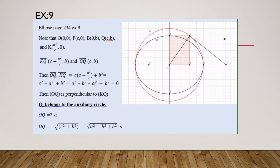Second, we want to prove that Q belongs to the auxiliary circle, so we must show that OQ = a. We find the distance OQ = √(c² + b²). Since c² = a² − b², this equals √(a²) = a. Therefore Q belongs to the auxiliary circle, which is the circle drawn in red.